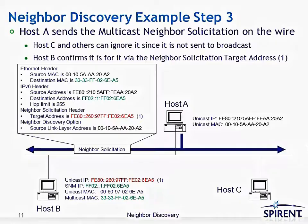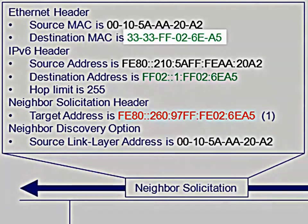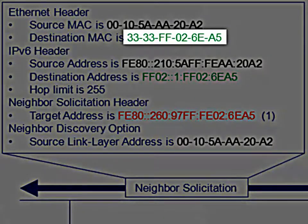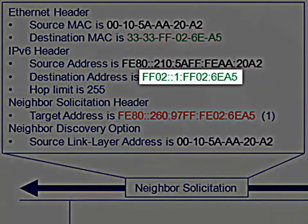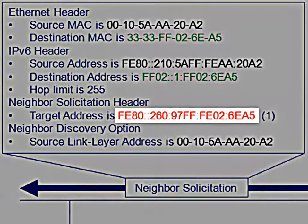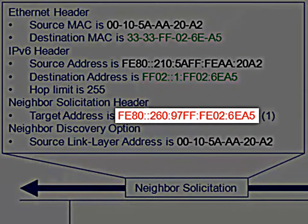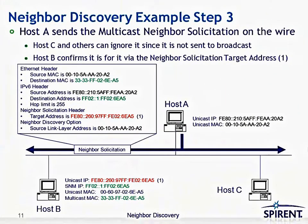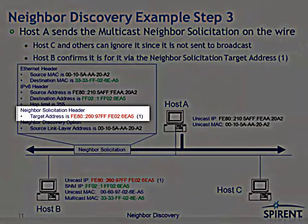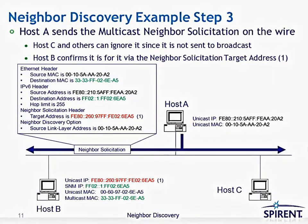Step three: now that host A has determined all the information it needs, it sends the multicast Neighbor Solicitation onto the wire. That solicitation packet propagates in all directions, so both host B and C will see it, as well as other hosts on the wire. But only host B will be listening to that destination MAC address 33:33:FF:02:60:A5, which was derived from host B's SNM address, which in turn was derived from host B's unicast IP address. Host B can double-check inside the Neighbor Solicitation header for the target FE80 address to confirm the packet is indeed for it.